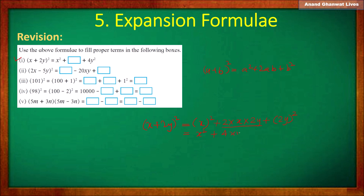Plus the square of 2y: 2² = 4 and y² gives 4y². Now comparing with the activity: x² is the first term and 4y² is the last term, so the middle term 4xy is the answer.